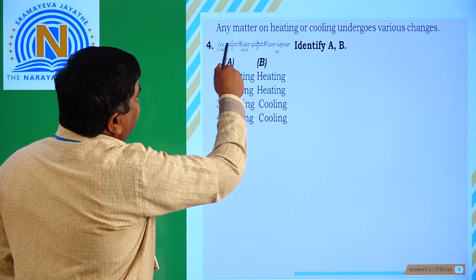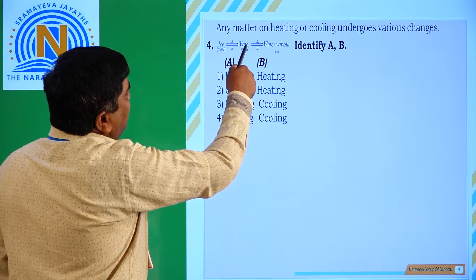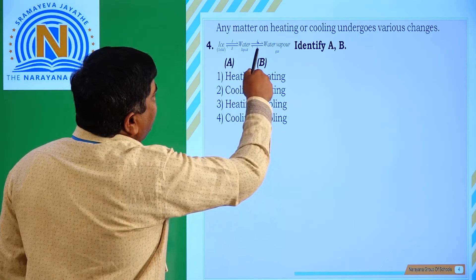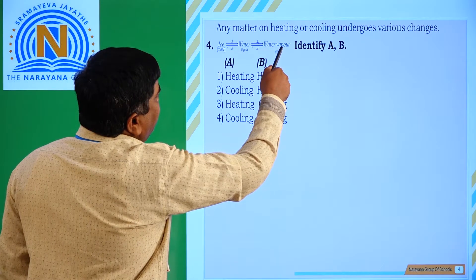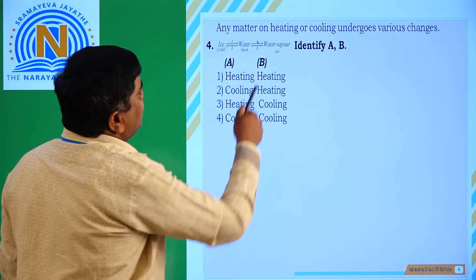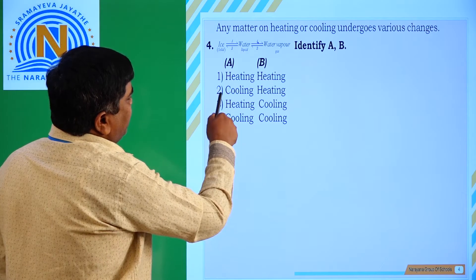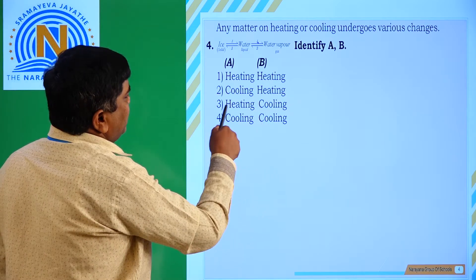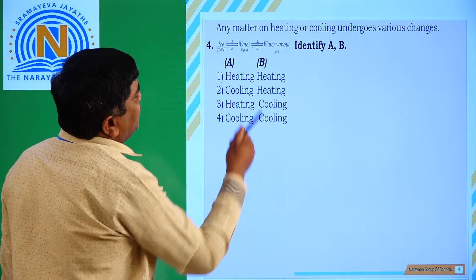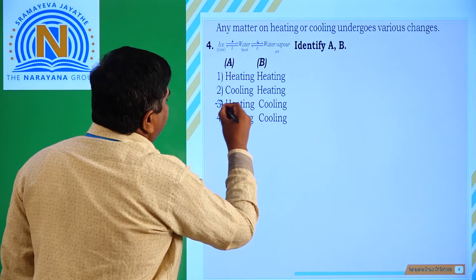Observing: ice changes to water — on heating, so A is heating. Water vapour changes to liquid — that is cooling, so B is cooling. Options given are: heating and heating, cooling and heating, heating and cooling, and cooling and cooling. A is heating and B is cooling, so option 3 is correct.